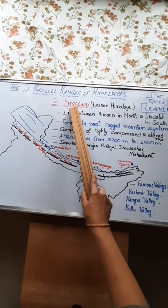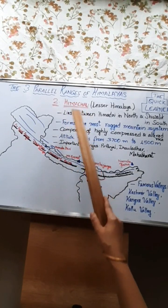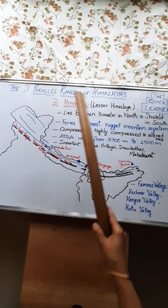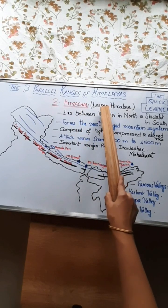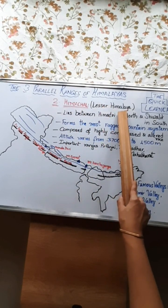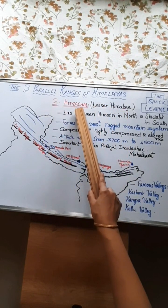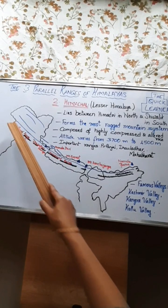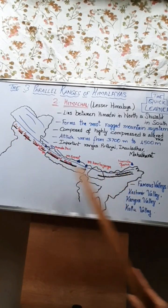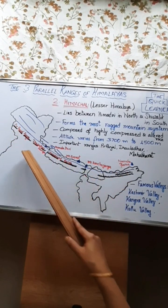Himachal is the second parallel range of Himalaya after Himadri and it is also known as the lesser Himalaya. This Himachal parallel range lies between the Himadri in the north and Shivalik in the south.